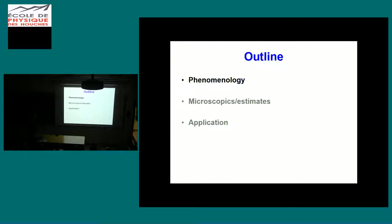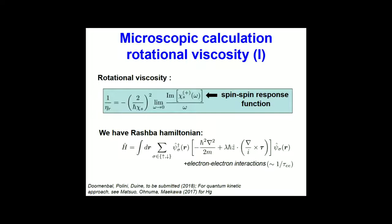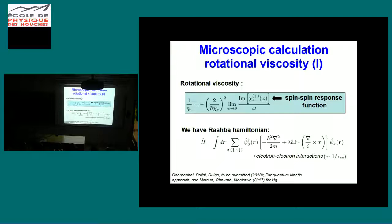Let me now go to microscopics to see how large the rotational viscosity can be. The rotational viscosity is essentially the spin relaxation due to spin-orbit coupling and interactions. Normally spin relaxation calculations take into account disorder and spin-orbit coupling. Here you look at spin relaxation due to spin-orbit coupling combined with interactions, not disorder. Specifically, you evaluate the imaginary part of the spin-spin response function to extract the rotational viscosity. We take the Rashba Hamiltonian as our model — the generic first-choice Hamiltonian for a 2D electron gas with spin-orbit coupling — with strength governed by λ, and take electron-electron interactions into account as a scattering time.